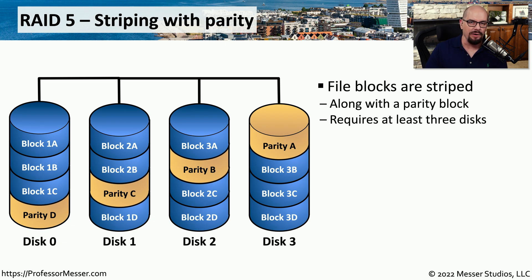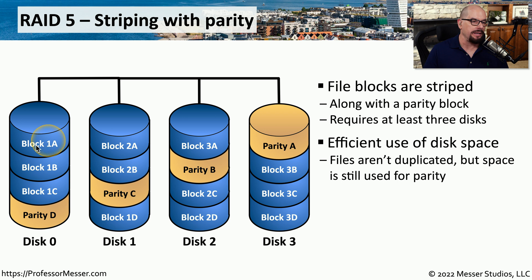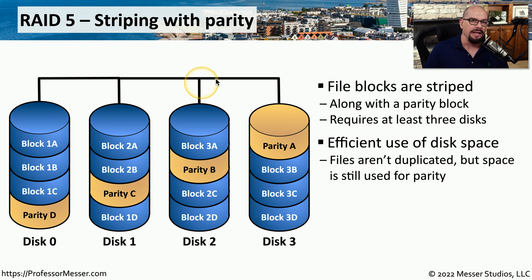Instead of duplicating every bit of data stored on these drives, there is a more efficient method — that method is RAID 5, which we call striping with parity. This is the same as RAID 0, where all of the information being stored is spread across different drives. But unlike RAID 0, which has zero redundancy, we have an additional drive where we store parity information. That parity information allows us to rebuild data if we lose any of the physical drives. If you're storing on four separate drives, three can be used for data and one for parity. We also distribute the parity to different drives, which helps during the recovery process.